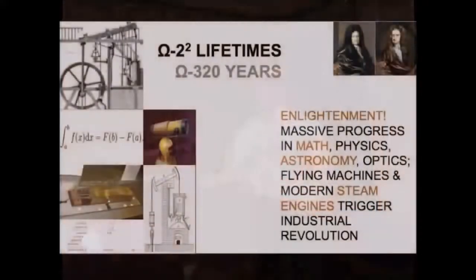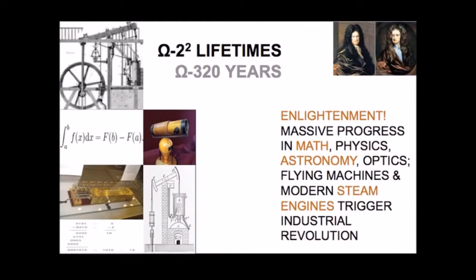Then the Western printing press — which some call the most important invention of the past 1,000 years — and the scientific revolution started. Take half of that and it's exactly the Age of Enlightenment: the first commercial steam engine was really used, Leibniz invented binary arithmetic, Newton revolutionized physics — this is one of his telescopes — and the fundamental theorem of calculus was published by Leibniz and Newton.